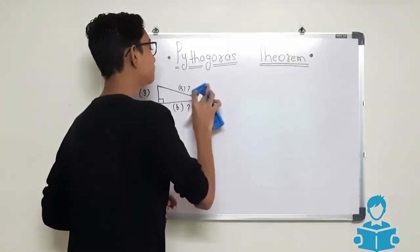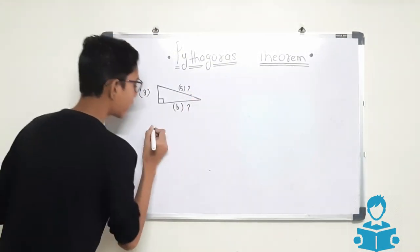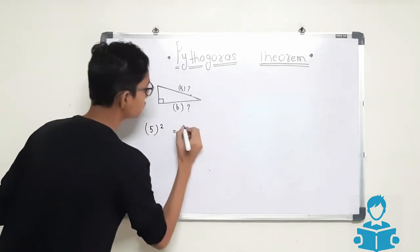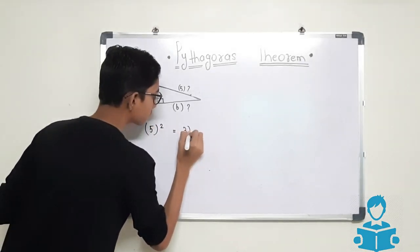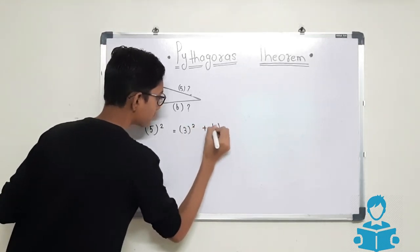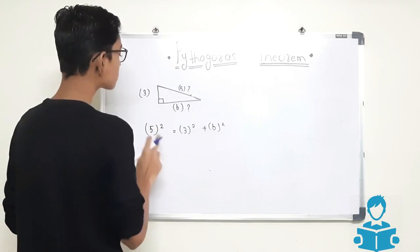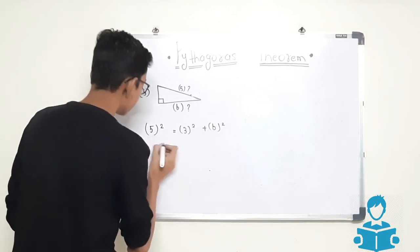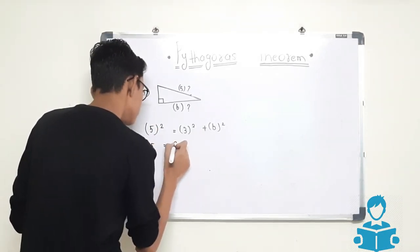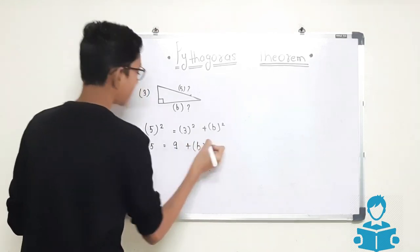To find this, we will use the same formula. Hypotenuse square, that is 5 square, is equals to 3 square plus B square. We will solve this: 5 square equals 25, which equals 9 plus B square.